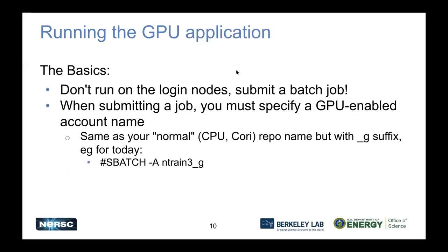The next step is to run it. Important things to remember: this is an HPC cluster, so don't run on the login nodes - submit a batch job. For any real work, you definitely want to be submitting a batch job. When you're in the batch environment you've got the full Slingshot MPI stack. On Perlmutter this is going to be a little bit easier than it was on Cori.